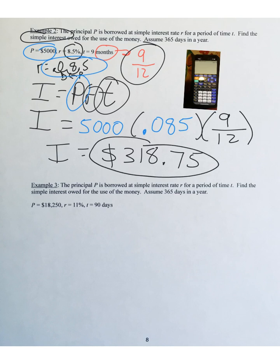Please keep in mind that $318.75 is just the interest alone. If the question had asked for the full amount owed back in a debt situation, you would add back the original $5,000 principal plus this $318.75 interest. That full amount you eventually pay back is called future value, which we'll see a formula for later. This formula I equals PRT generates just the simple interest amount.